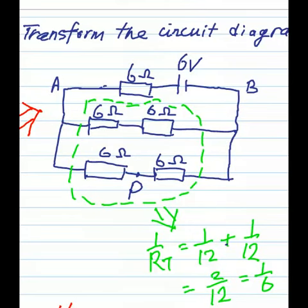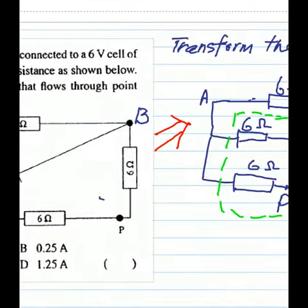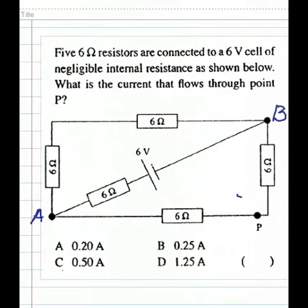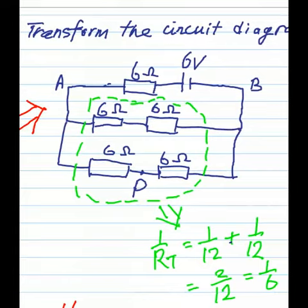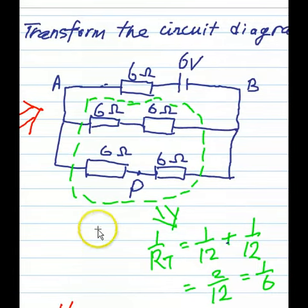Now we can identify the two points, point A and point B, in the circuit in the transformed circuit diagram.